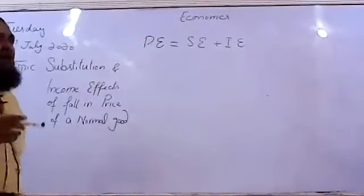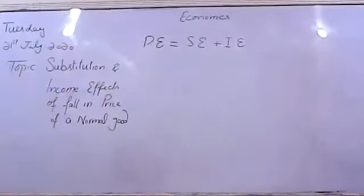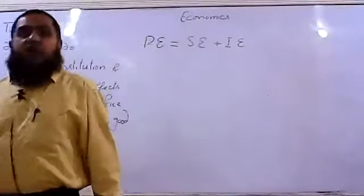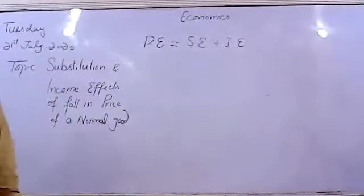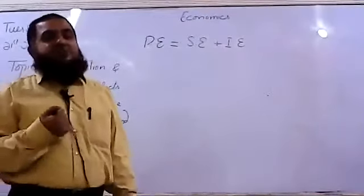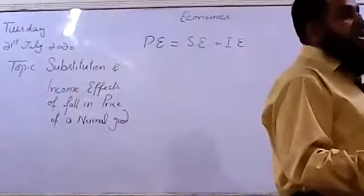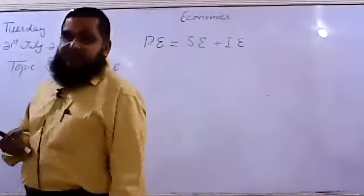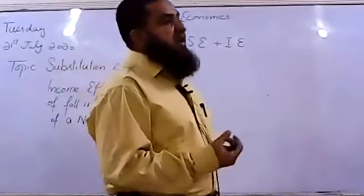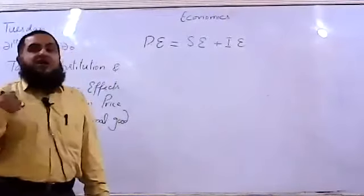We see movement along the indifference curve — that is called the substitution of one good with another — and the slope of the indifference curve is called MRS, or marginal rate of substitution. Movement along the previous indifference curve due to the change in the price of commodity X shows us the substitution effect. When price of a commodity decreases, the real income of the consumer increases — meaning his affordability in real terms to buy more units increases.